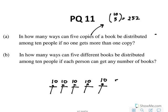So the answer actually is just 10 to the power of 5, because each of the books can go to any of the ten people. The number of possibilities is a hundred thousand. This is for part b.